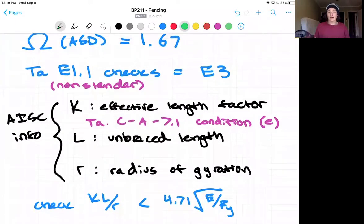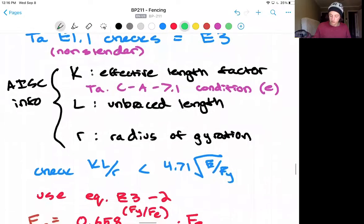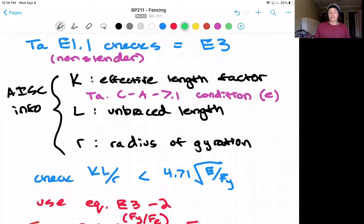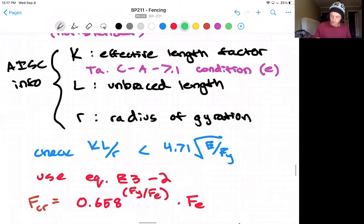So next we check KL over R is less than 4.71 the square root of E over Fy. And what that tells us is we can use equation E3-2 in order to check our compression, or find our critical force, which is noted by the equation here for Fcr.